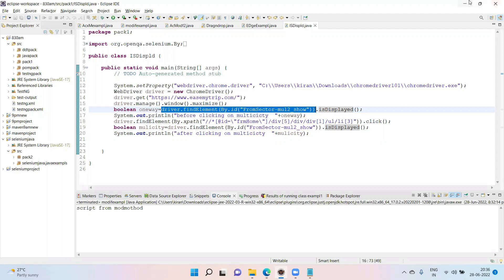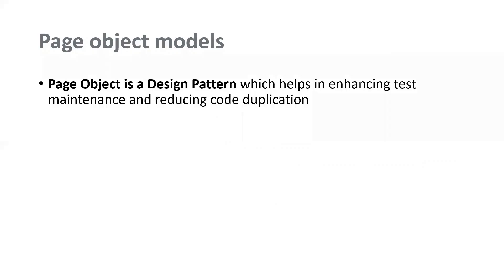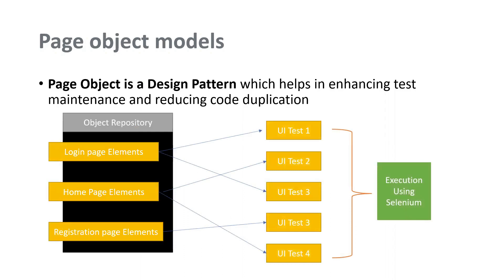That is the concept of the page object model — a very important concept. Page object model is a design pattern. This design pattern helps avoid code redundancy. If you have duplicate code and any maintenance difficulty in the normal pattern, you can see the login page elements, home page elements, and registration page elements stored in an object repository. The repository is called storage — it is called object repository, containing objects and elements.